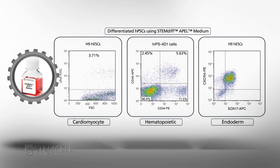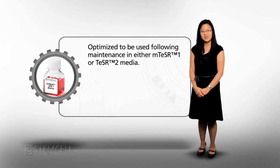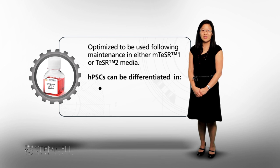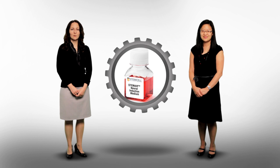In addition to cardiomyocytes, StemDiff APEL Medium has also been used to differentiate to hematopoietic and definitive endoderm cells. Although optimized to be used following maintenance in either mTeSR1 or TeSR2 media and using the embryoid body-based AggreWell system, StemDiff APEL Medium can also be used to differentiate cells in adherent cell-based systems.